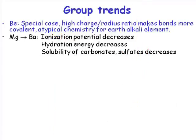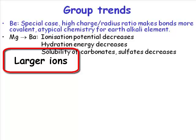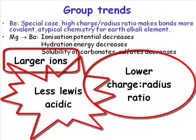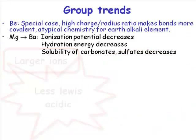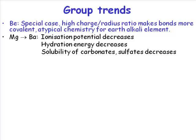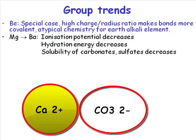Moving to the more representative group 2 metals — magnesium through to barium — the ionization potential is decreasing because we're moving further from the nucleus, and the hydration energy is also decreasing. Why does hydration energy decrease going down the group? Because the atoms get bigger, and a lower charge-to-radius ratio makes them less Lewis acidic, so they bind water molecules more weakly. As a result, the energy recovered when dissolving decreases, and the solubility of these species also decreases. A large 2+ cation paired with a large 2− anion like a carbonate or sulfate is a recipe for a very poorly soluble material.